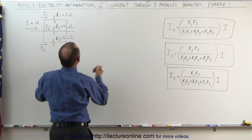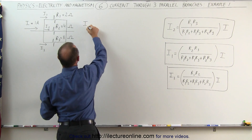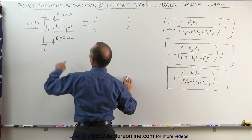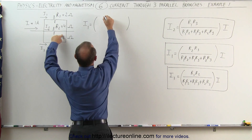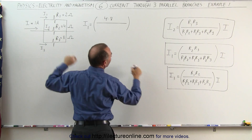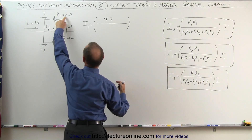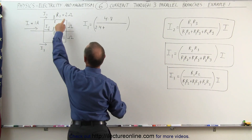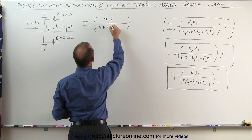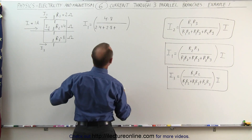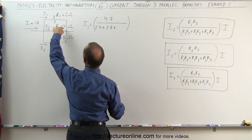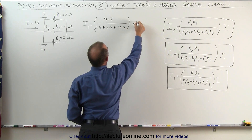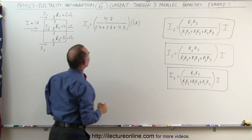So to find current I1, in the numerator we're going to have R2 times R3, which is 4 times 8, divided by R1 times R2, which is 2 times 4, plus R1 times R3, which is 2 times 8, plus R2 times R3, which is 4 times 8. And we multiply that times 1 amp of the total current entering the branch point.